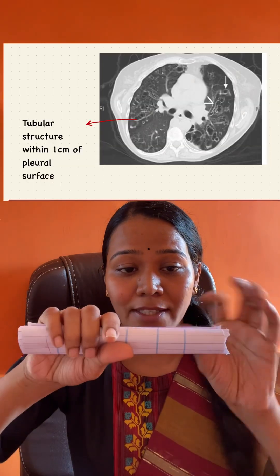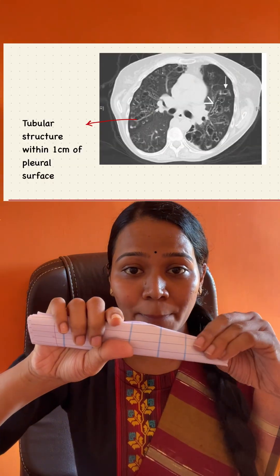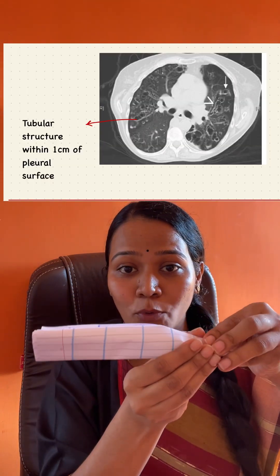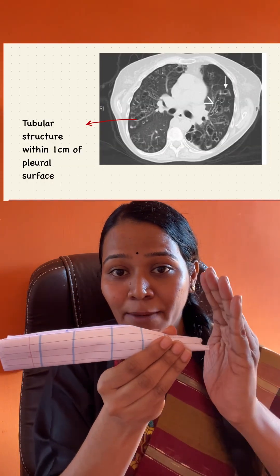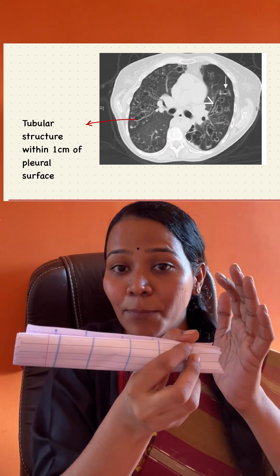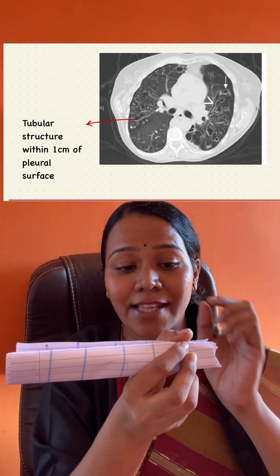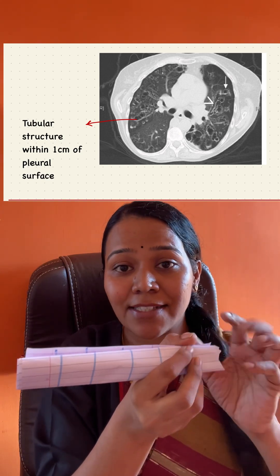The third appearance: normally the bronchial wall tapers near the periphery and near the pleura you won't find much. So if near the pleura you are finding the bronchial walls, that means there is dilatation of bronchial traces.